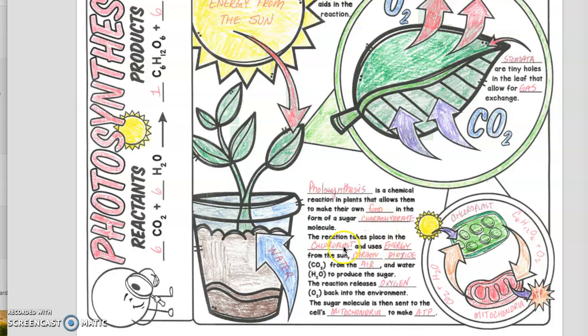The reaction takes place in the chloroplast and it uses energy from the sun, carbon dioxide from the air, and water to produce sugar. This reaction releases oxygen back into the environment.